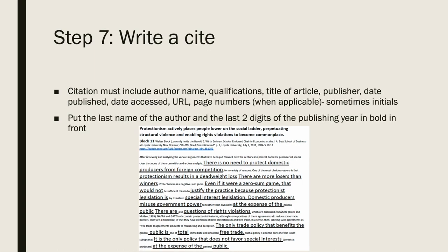Once you've written your tag, you're going to write a cite. The citation must include: the author's name, the author's qualifications, the title of the article, the publisher, the date it was published, the date you accessed it, the URL you accessed it at, and page numbers when applicable. People will often put their initials or school-dash-initials at the end of cards so they're identifiable as cards written by you. It's critically important that citations have all of these parts — otherwise it's not good evidence ethics, and if we don't accurately cite our sources, it's plagiarism.